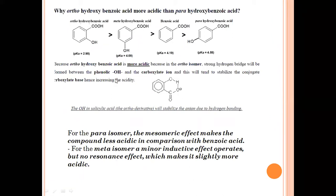So what is the acidity order of those substituted benzoic acids? The acidity order is: ortho-hydroxybenzoic acid is more acidic than meta-hydroxybenzoic acid, which is more acidic than benzoic acid, which is more acidic than para-hydroxybenzoic acid.